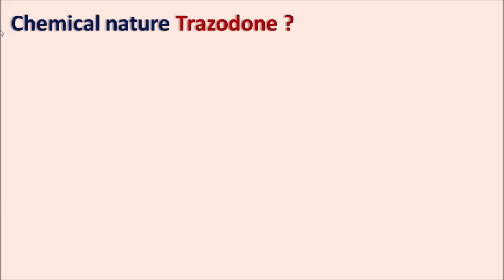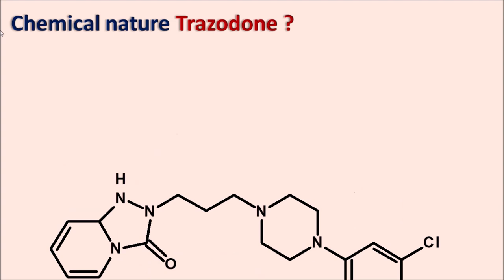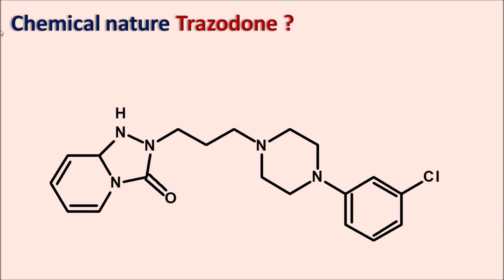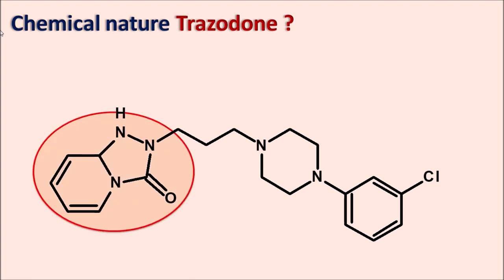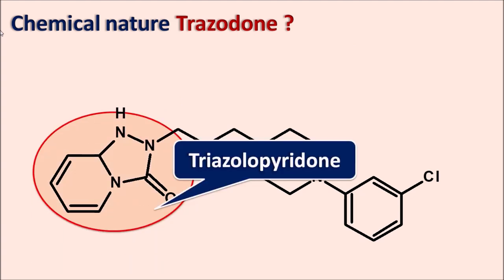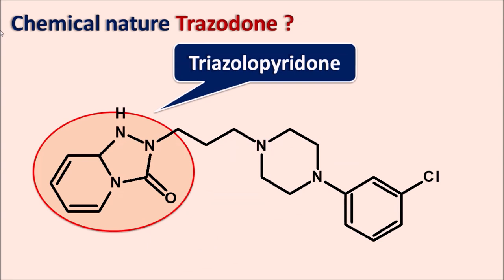Now let us look at the chemical nature of trazodone. This is the structure of trazodone — it is a large structure but not completely similar to buspirone. It contains a fused ring system known as the triazolopyridone ring system. So buspirone has the azaspirodicane ring, while trazodone has the triazolopyridone ring system.